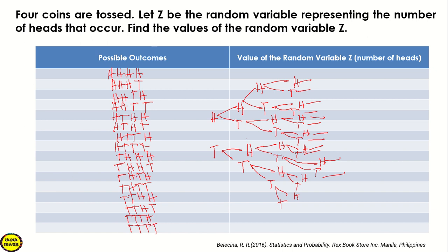Now, to get the values of random variable Z, we count the number of heads in each outcome. The first outcome has 4 heads. Then 3, 3, 2, 3 — tracing through the outcomes — then 2, 2, 1, 3, 2, 2, 1, 2, 1, 1, 0.